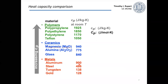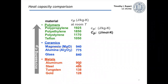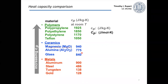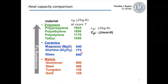In terms of how heat capacity looks for different materials: metals are generally the lowest, meaning you only need a little heat to raise the temperature of a metal — it heats up quickly. Ceramics are a little bit higher, and polymers are much higher, so it takes a lot of heat to increase the temperature of a polymer. A practical example: if you have a metal pan and a ceramic pan on your stove with the same heat, your metal pan will get hotter more quickly.